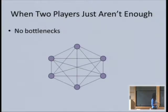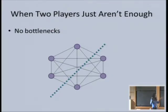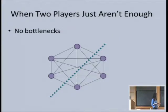Even though two-player lower bounds are really powerful, there are cases where they won't give us what we want. For example, if the network is really well-connected with no bottlenecks, no matter which way you partition it into two parts and have one player simulate each part, there's going to be a lot of bandwidth between the parts—something like n squared. If I have a lower bound of Ω(n) and try to apply it to this network, I'm not going to get anything in terms of number of rounds needed.